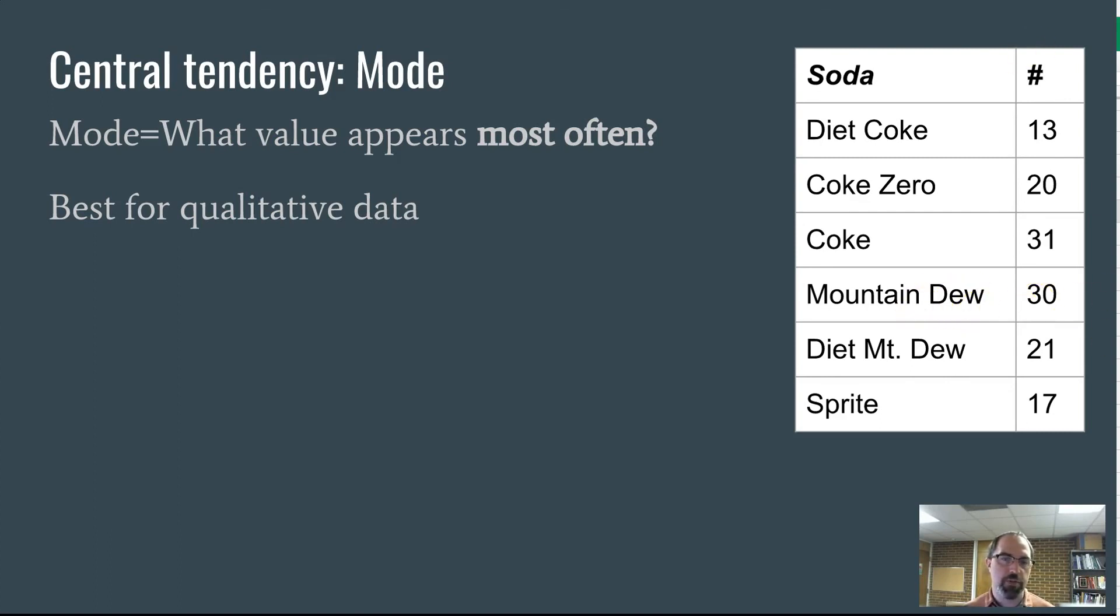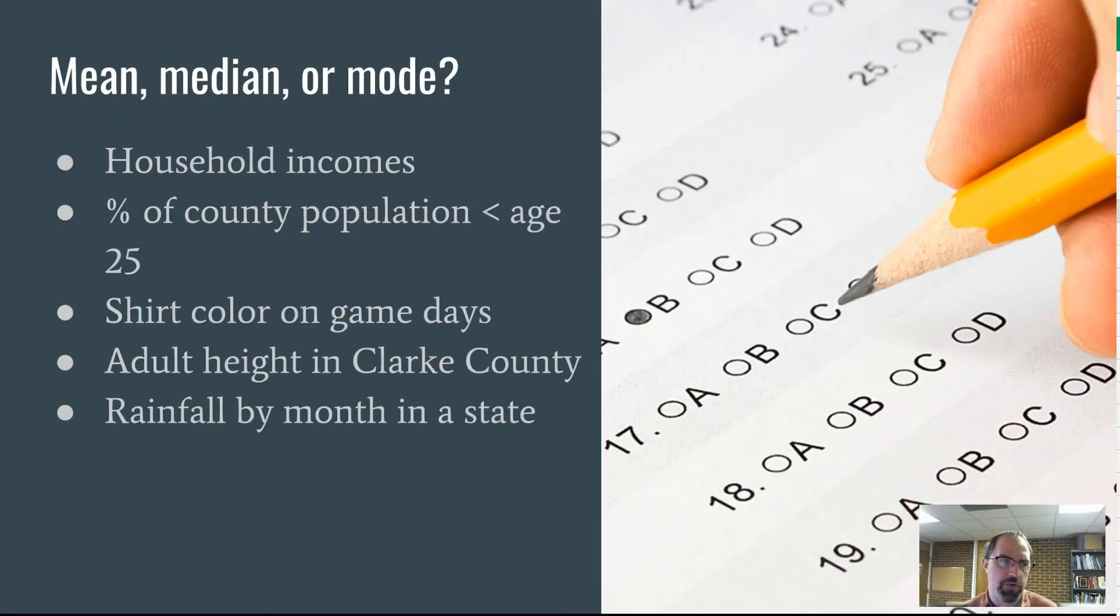In this case, that would be Coke. Coke showed up 31 times. That would be the mode in this case. That would be what you would look at as being the middle of the data. That's the most common response. And it makes more sense when you're dealing with categorical data like that.